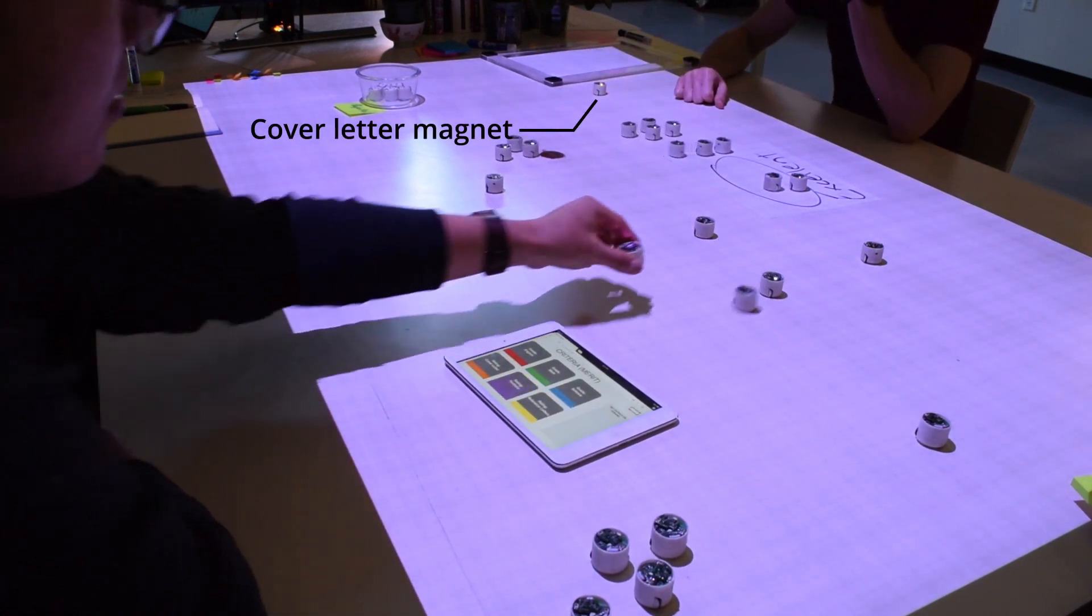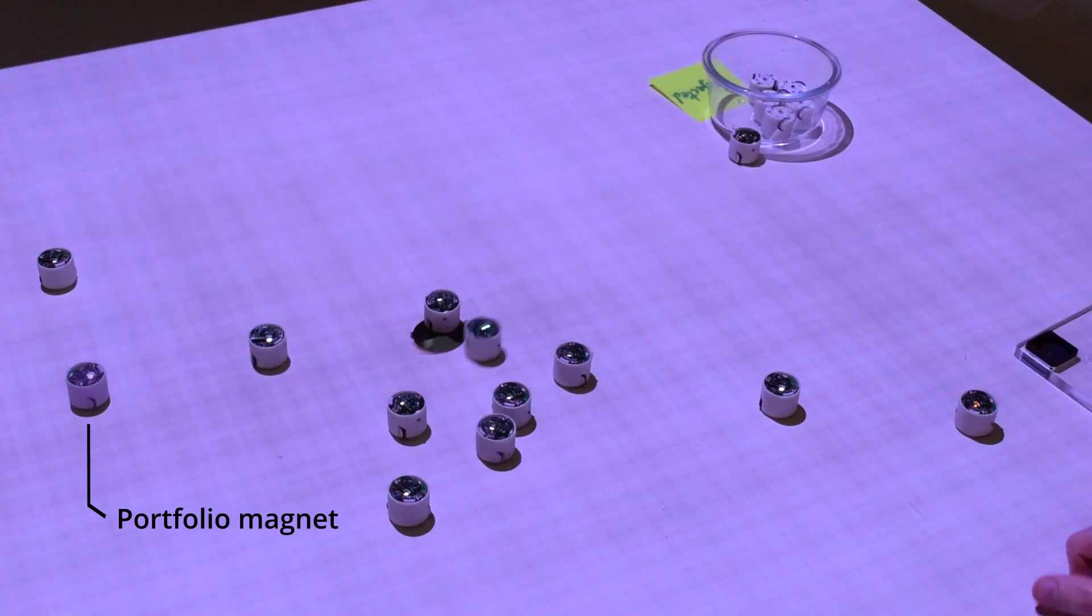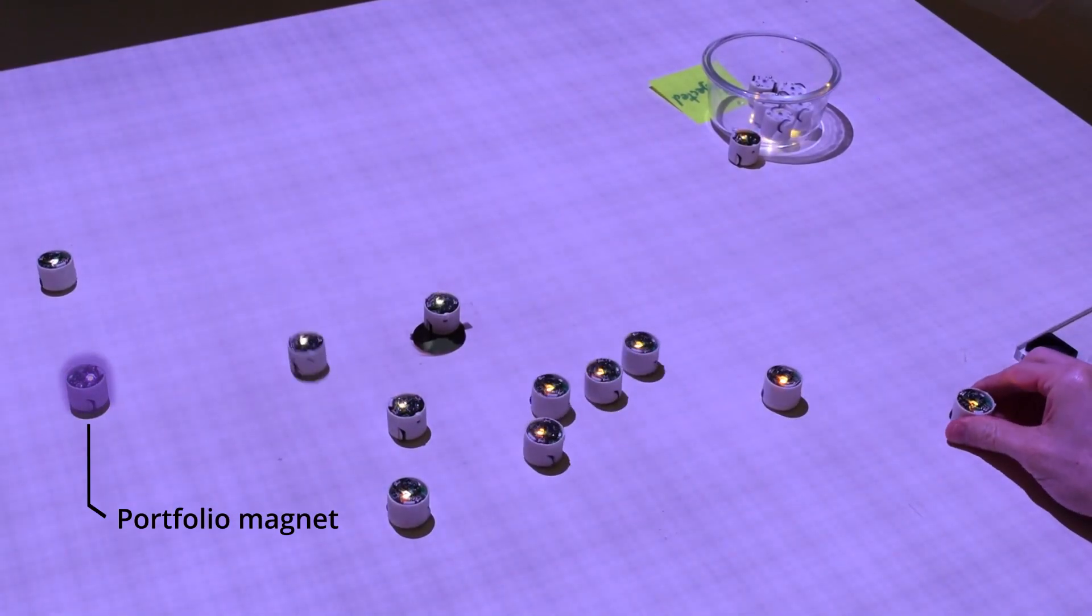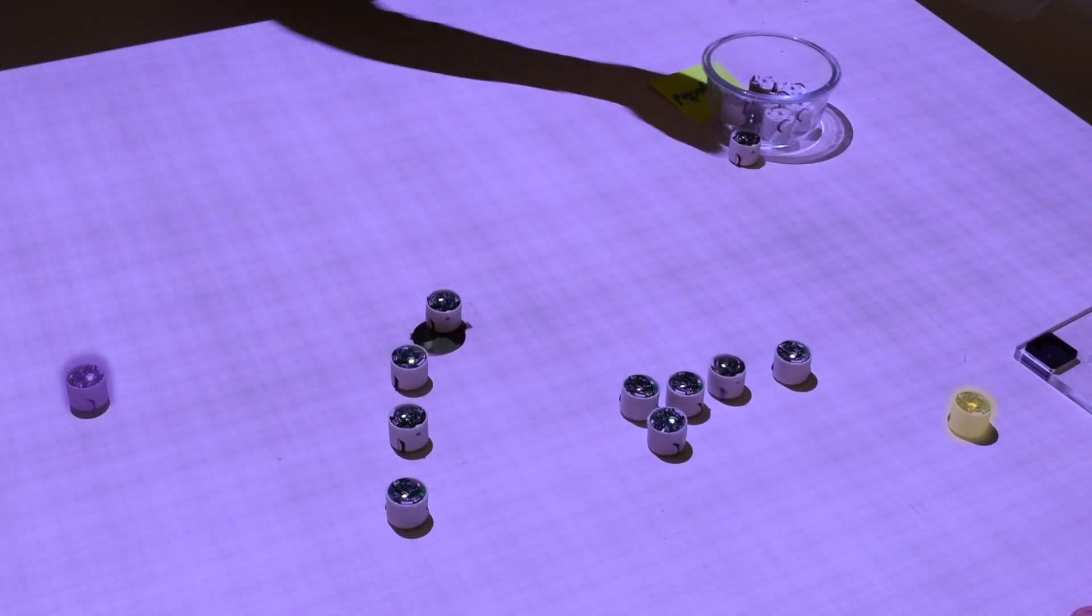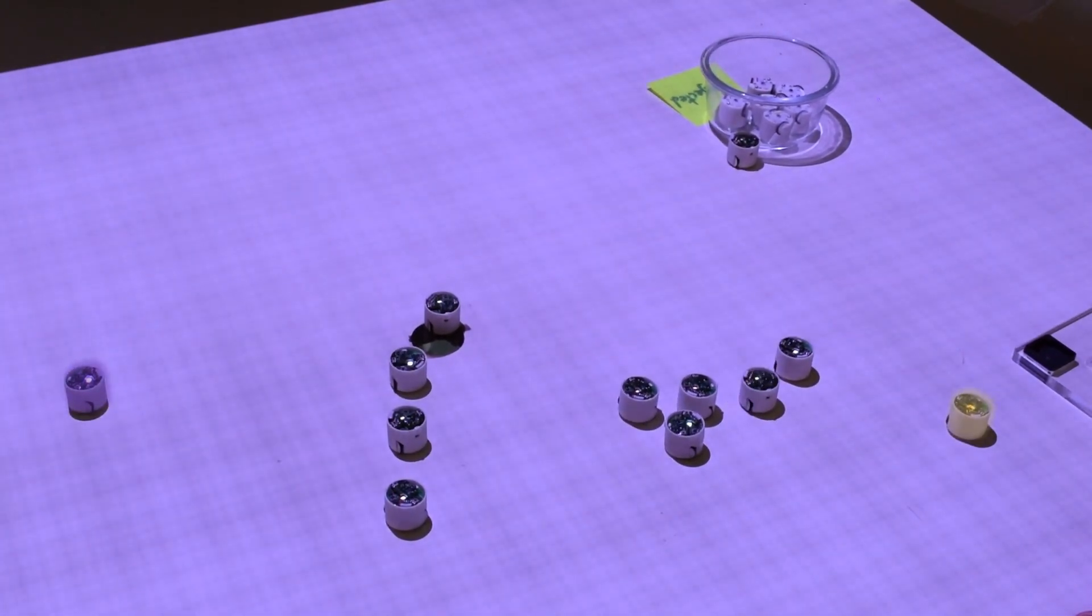They quickly realize that one of the students has a very low score for his cover letter. So they unanimously decide to reject the student and place them in a container they labeled with reject.